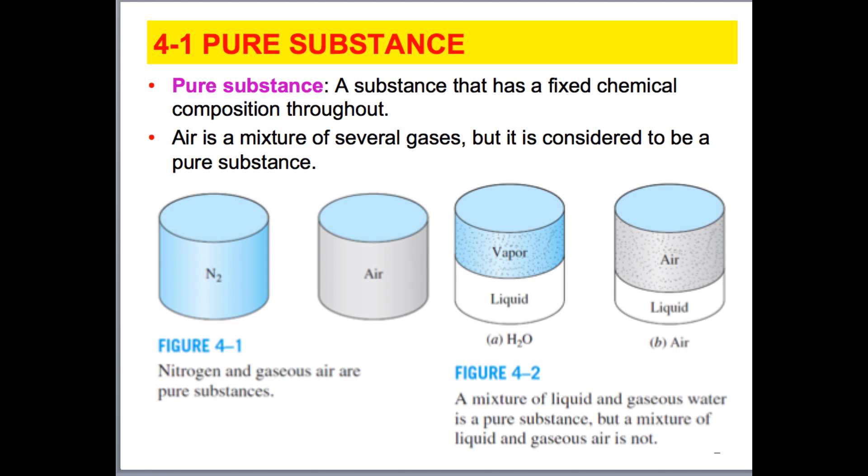When air is in gaseous form, we consider it a pure substance. But as we begin to condense it, and we won't talk about condensing it because that's getting into cryogenics, we would not consider that to be a pure substance because as we condense it, we would have liquid nitrogen and liquid oxygen phases, basically two different types of liquids coexisting together.